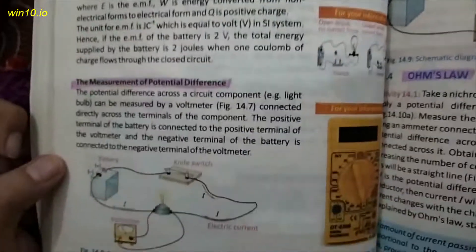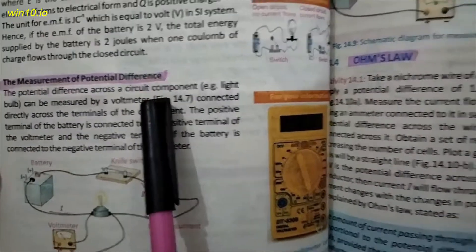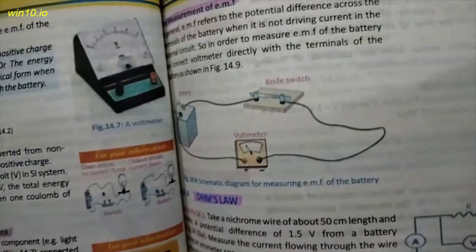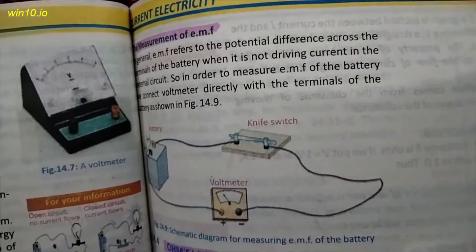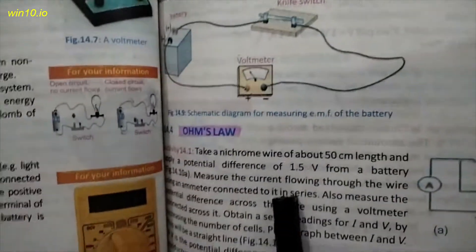Page number 96, the measurement of potential difference. This topic is complete, it will be included. Page number 97, the measurement of EMF. Next topic is Ohm's law.